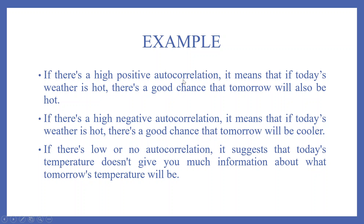If there is a high positive autocorrelation, it means that if today's weather is hot, there is a good chance that tomorrow it will also be hot. If there is a high negative autocorrelation, it means that if today's weather is hot, there is a good chance that tomorrow will be cooler. If there is low or no autocorrelation, it suggests that today's temperature does not give you much information about what tomorrow's temperature will be.